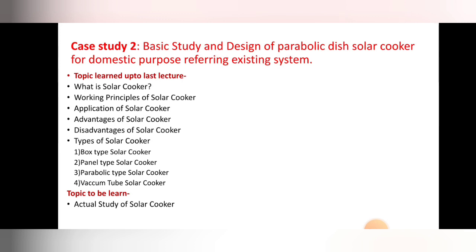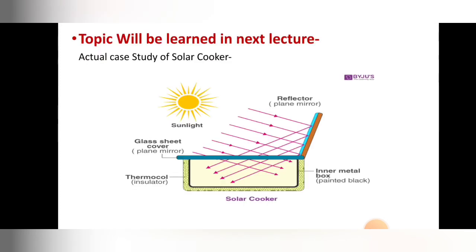We have covered: what is a solar cooker, the working principle of a solar cooker, applications of a solar cooker, and advantages and disadvantages of a solar cooker. Types of solar cooker have also been covered in the last lecture. Those who have not seen those videos can watch them from the channel. In today's lecture, we are going to see the last point related to the second case study, that is the actual case study related to the solar cooker.